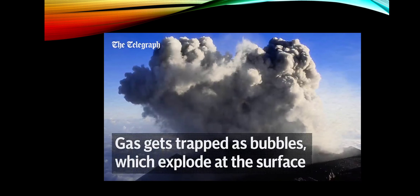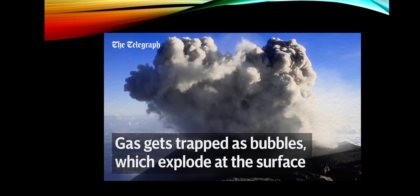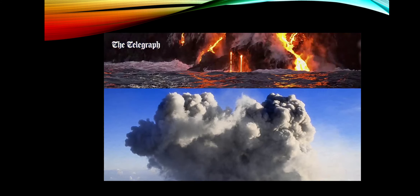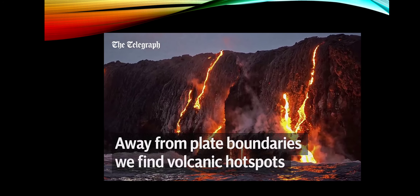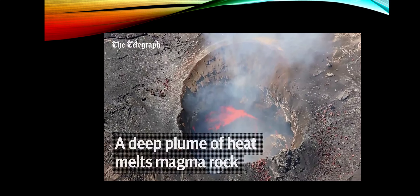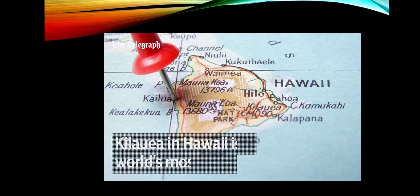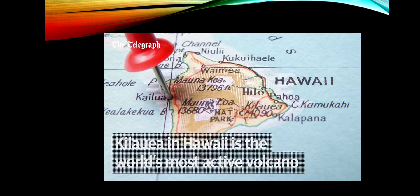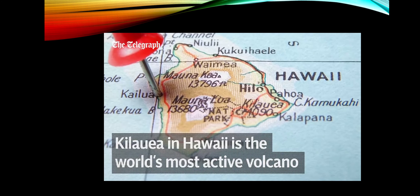Because the magma is so thick, the gases released on melting get trapped in large bubbles. When one of these reaches the surface, it bursts — this is what causes an explosive volcanic eruption. There are also a number of so-called volcanic hotspots away from plate boundaries. Here, mantle rock is melted by a plume of heat originating from deep in the earth. The Hawaiian Islands were formed over one such hotspot and still contain the world's most active volcano, Kilauea.